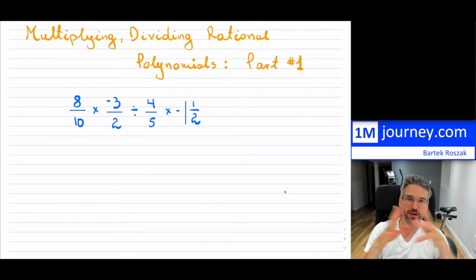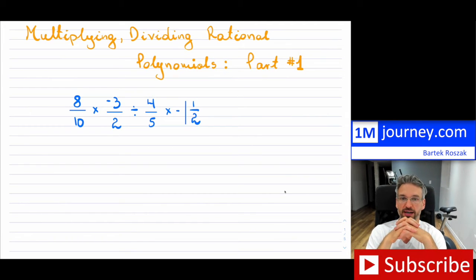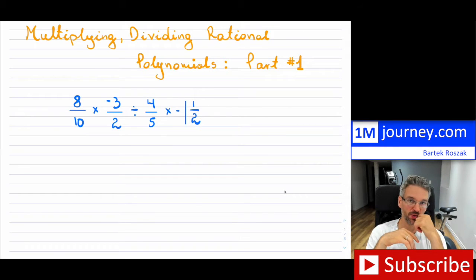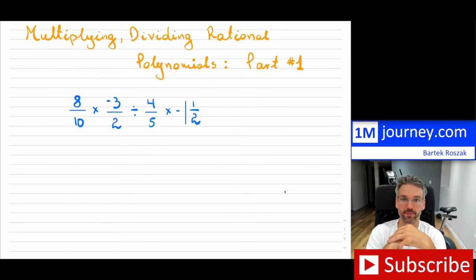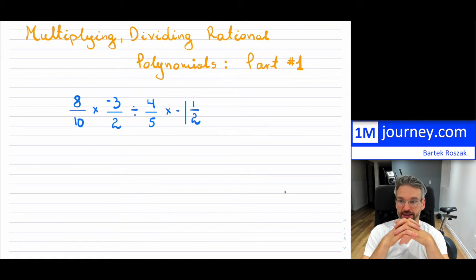Welcome back. We're covering multiplying and dividing rational polynomials now. When you have a few polynomials and sometimes you have them as rational polynomials, what happens when you start multiplying and dividing them?